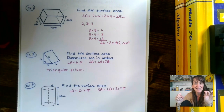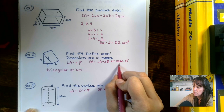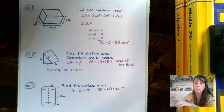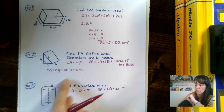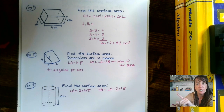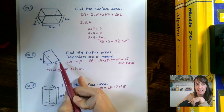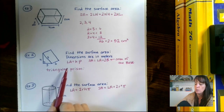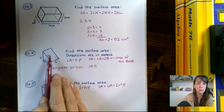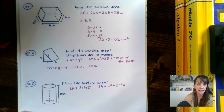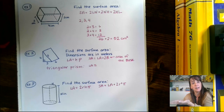This is important because we need to talk about the area of the base. Your base is not what the shape is sitting on — the bottom part. Your base is whatever shape is not a rectangle; in this case, the triangle. The height is what connects your two bases. So in this example, our height is not four — our height is six, because six connects the two triangular bases.